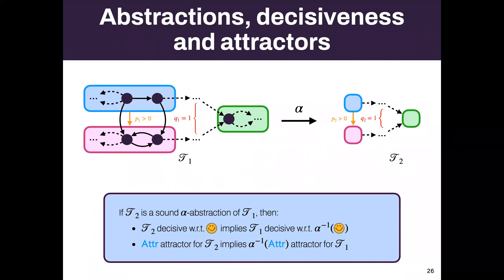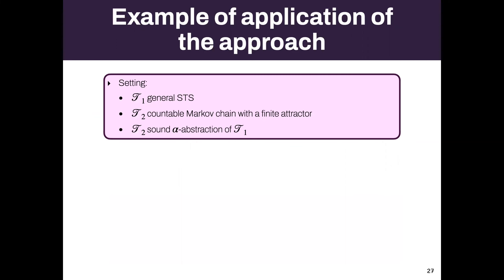We say the abstraction is sound whenever it preserves reachability properties. If from some state you can reach the green target with probability one in the abstract system, it should be the case in the original concrete system. Under this condition, very nice properties hold: if you have a sound abstraction, and T2 is decisive, then T1 is decisive. Also, if T2 has a finite attractor, T1 also has that attractor.